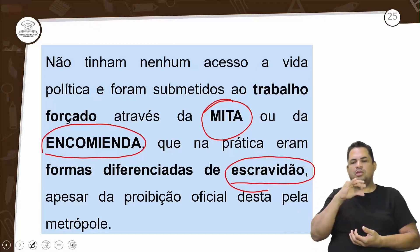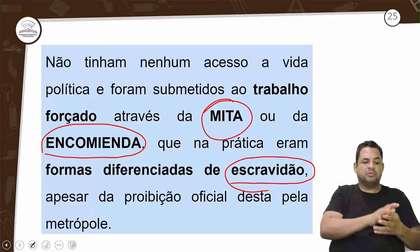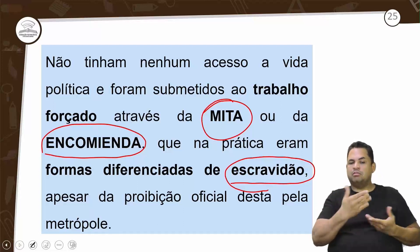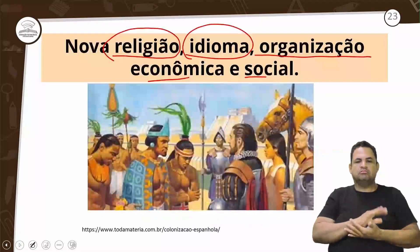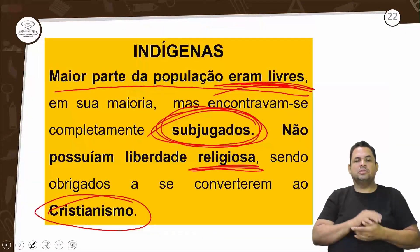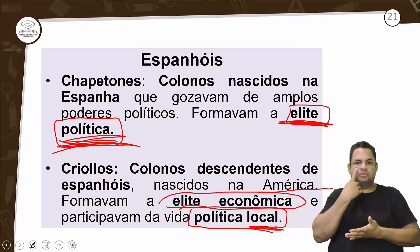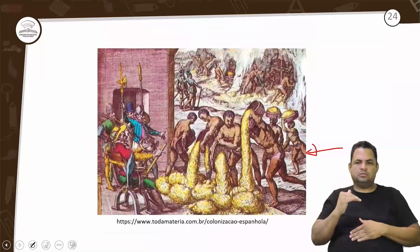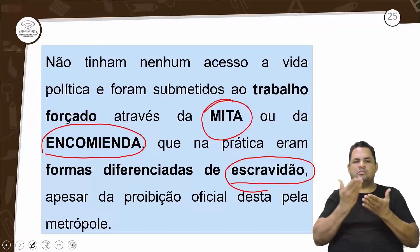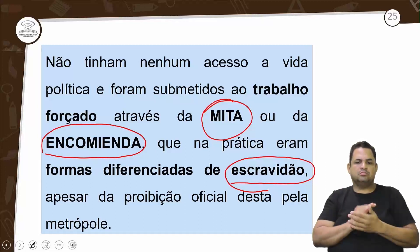A metrópole proibia, mas na prática eles diziam: 'Aqui quem vai mandar somos nós.' Vamos ter esse sistema com os indígenas. Estamos falando desses indígenas que vão ficar sob controle e subjugados à mita e à encomenda.